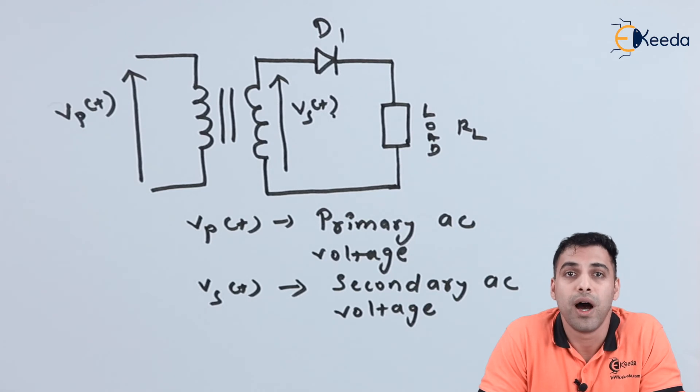Ultimately, the voltage across the load which we will be getting will be a DC voltage, but it will be pulsating, and all the negative cycles of the AC supply given as input will be eliminated. Thank you so much for watching this video.